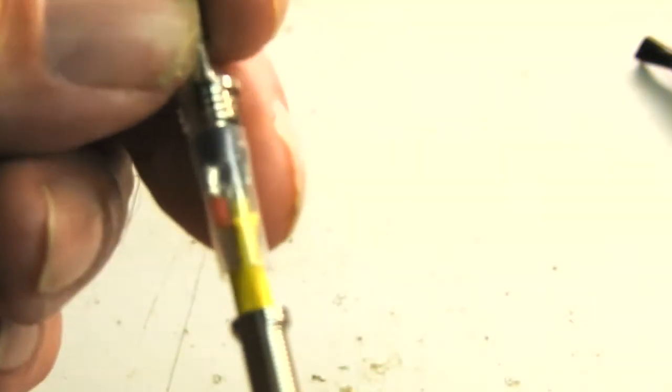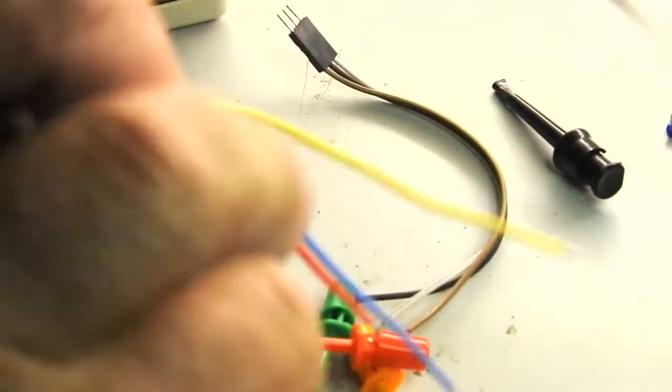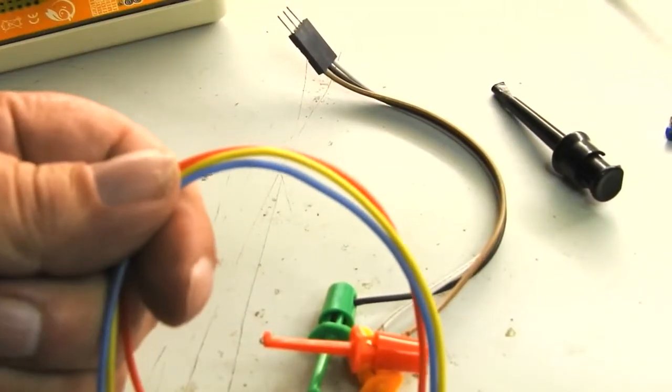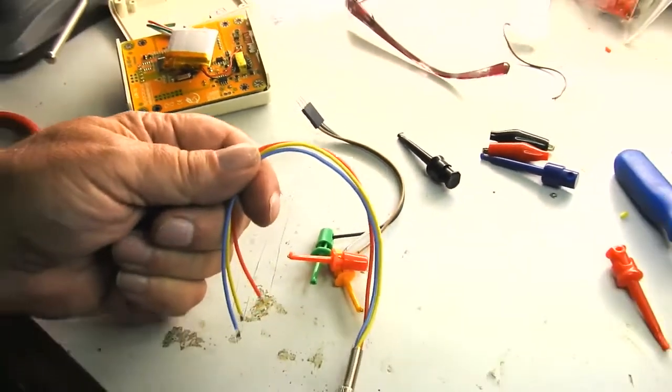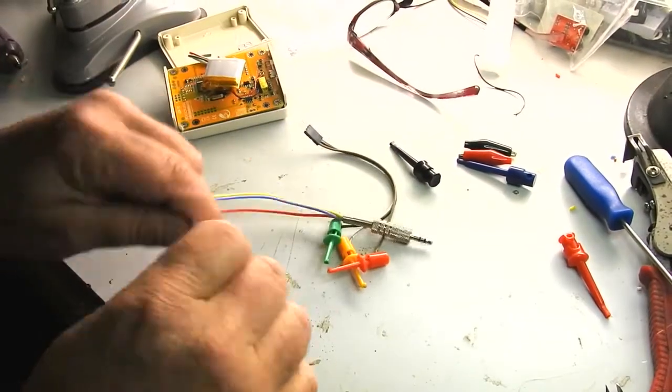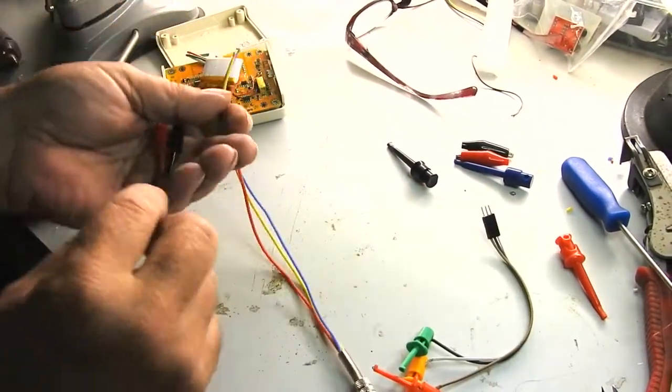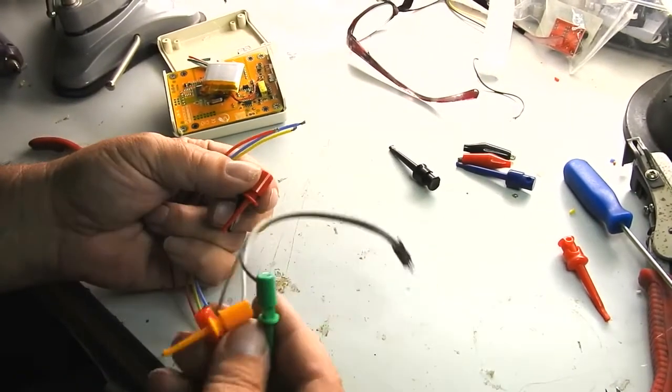So a nice solid robust connection. Heat shrink tubing sleeve over that. Of course, you can make up lots of these little cables with different fittings at the other end. You could use these little things like the original head or larger ones.